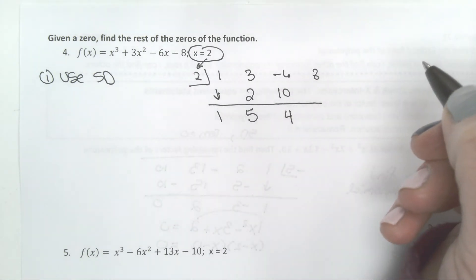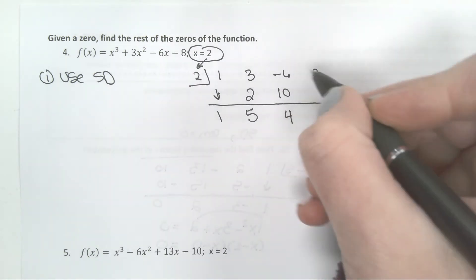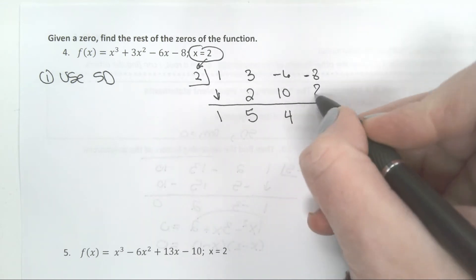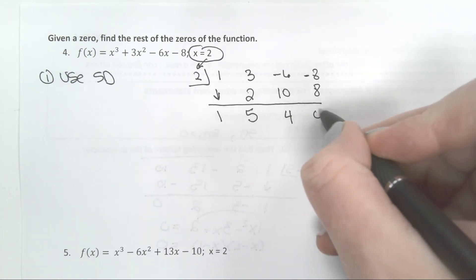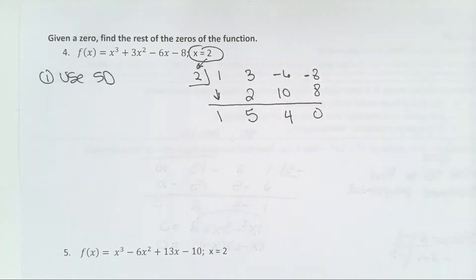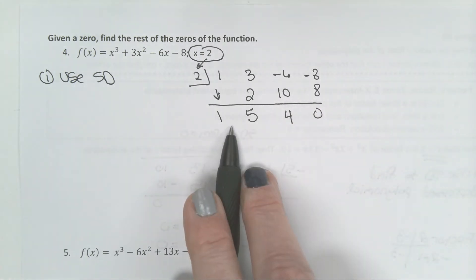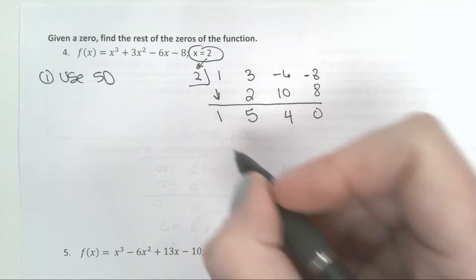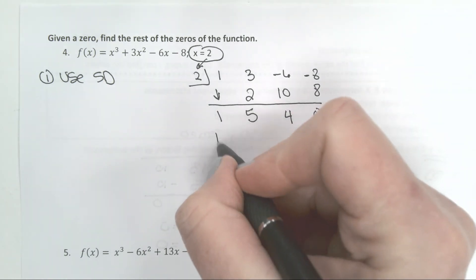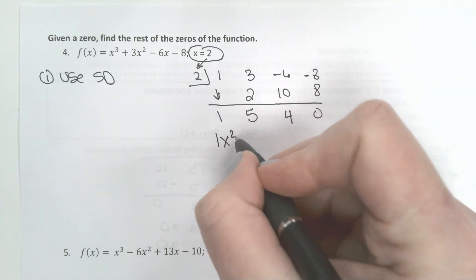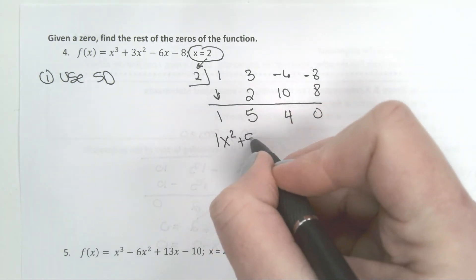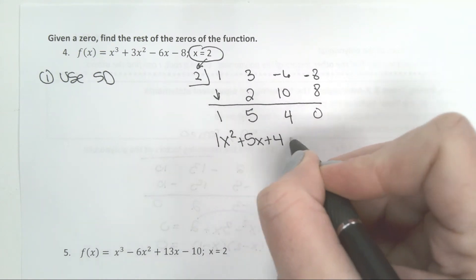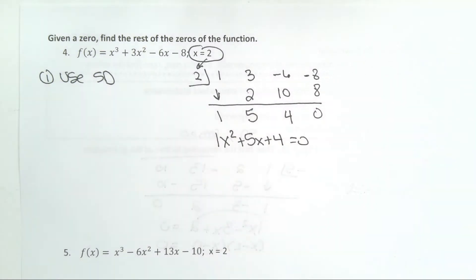That's a negative 8. Multiply and add. Now put your variables back in. So I have 1x squared plus 5x plus 4 equals 0.